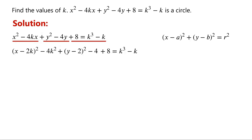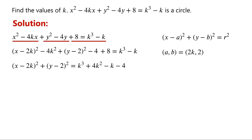Rearranging the equation, we have x minus 2k all squared, plus y minus 2 all squared, equals k cubed plus 4k squared minus k minus 4. This is the equation of a circle. The center of the circle is (2k, 2), and the square of its radius is given by the expression k cubed plus 4k squared minus k minus 4.